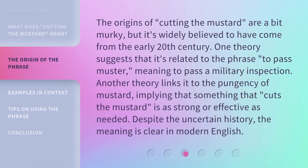The origins of cutting the mustard are a bit murky, but it's widely believed to have come from the early 20th century. One theory suggests that it's related to the phrase 'to pass muster,' meaning to pass a military inspection. Another theory links it to the pungency of mustard, implying that something that cuts the mustard is as strong or effective as needed. Despite the uncertain history, the meaning is clear in modern English.